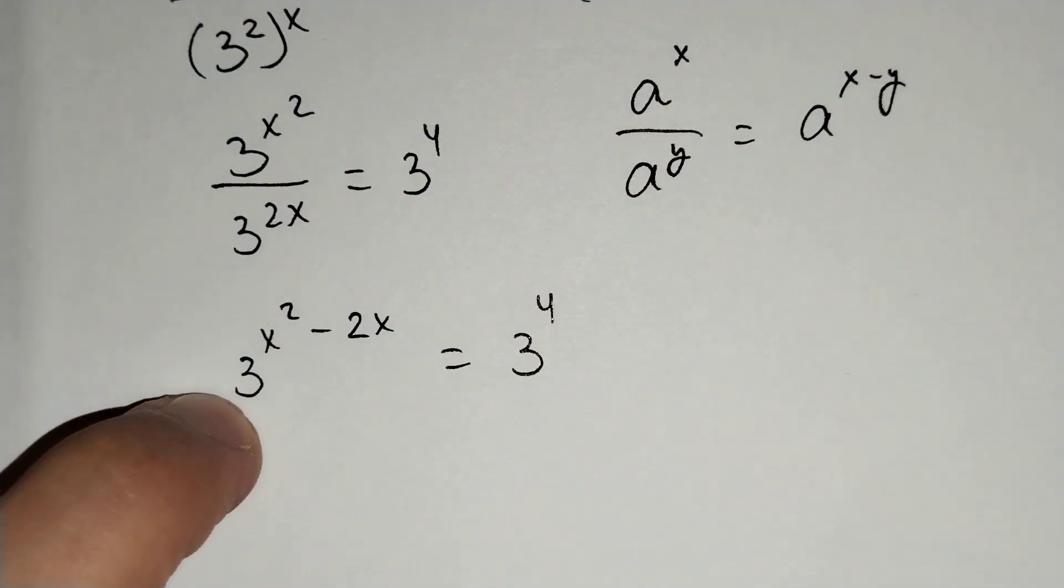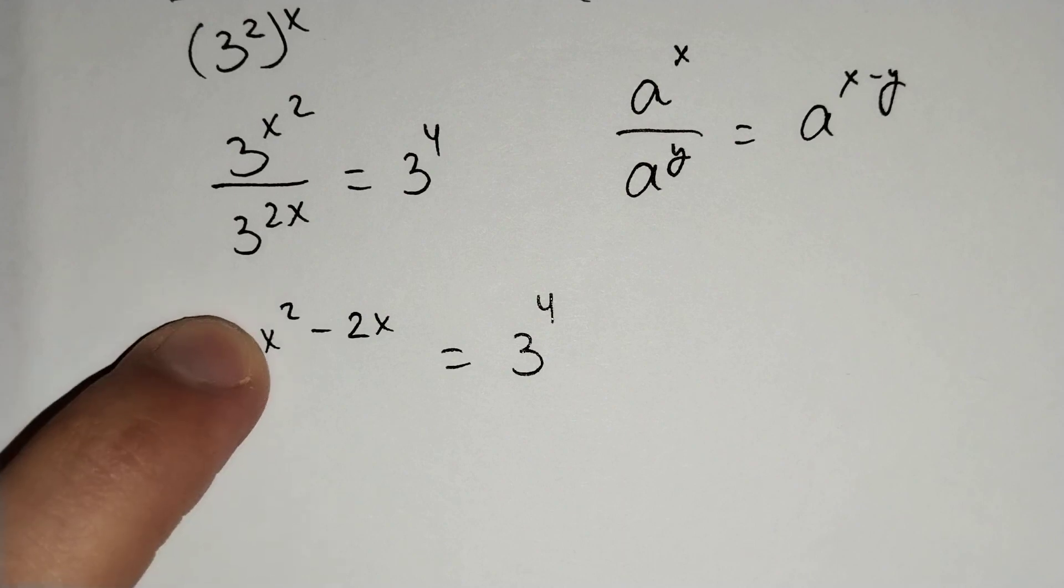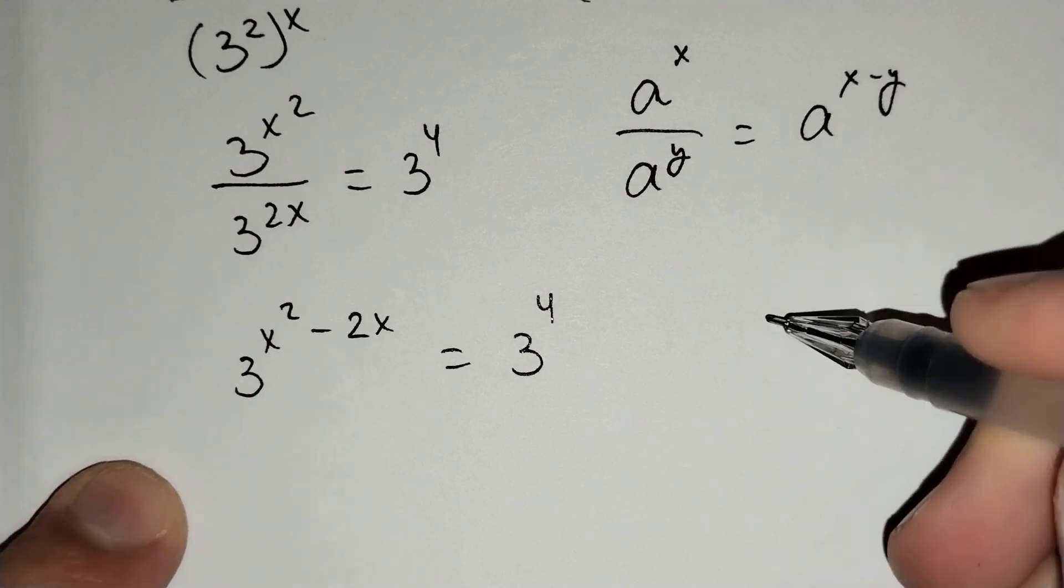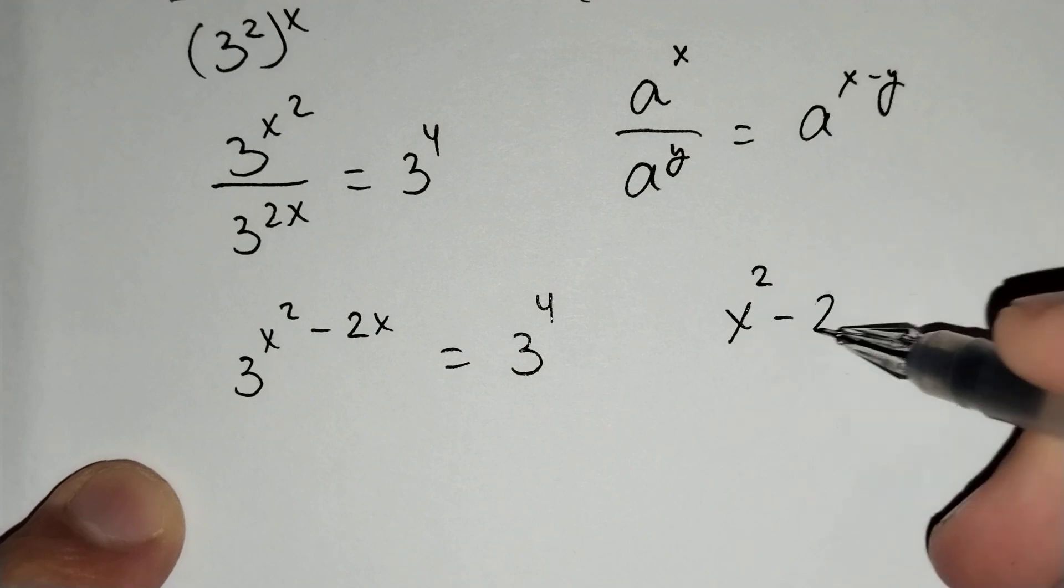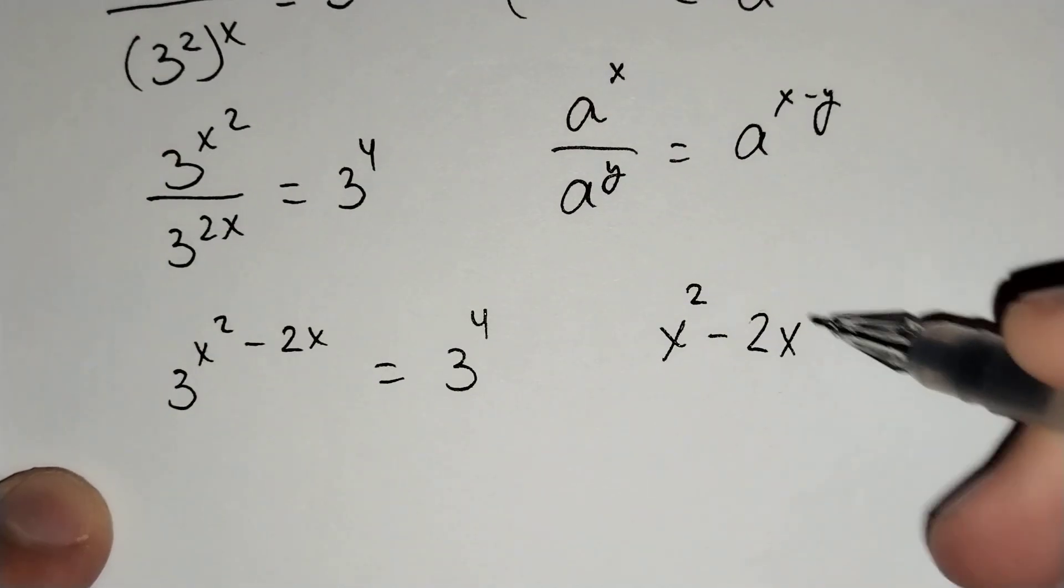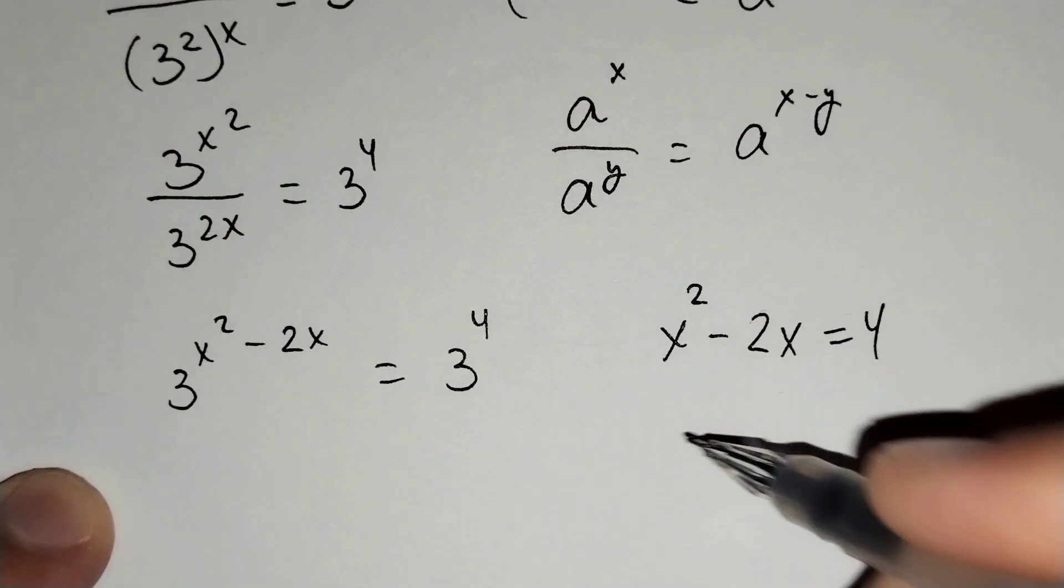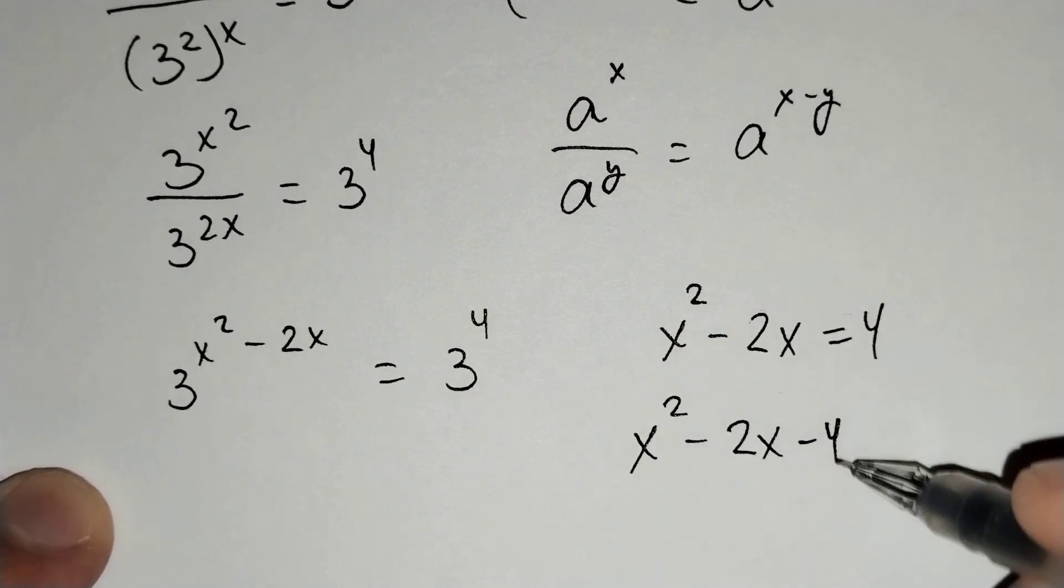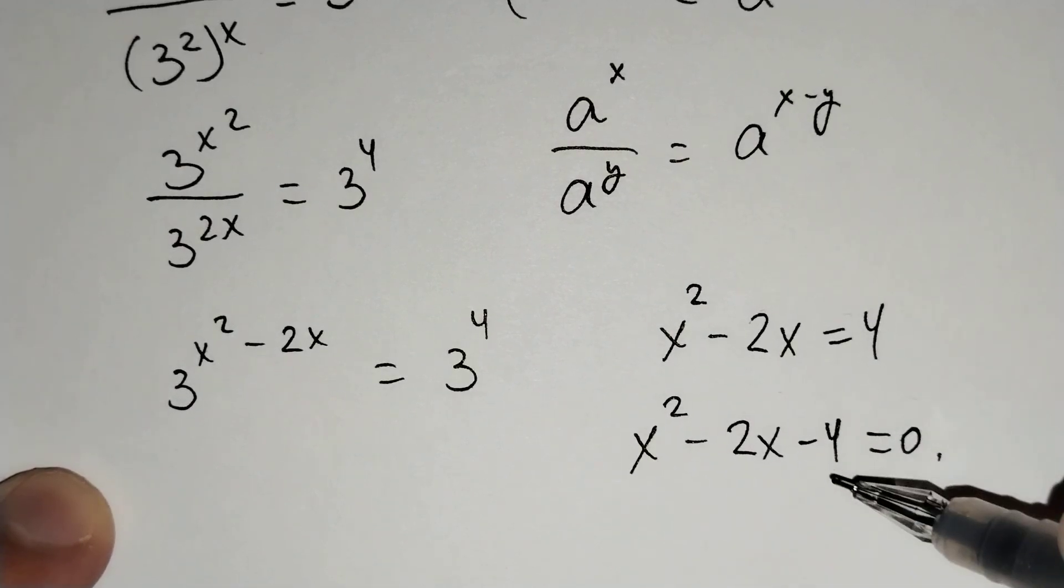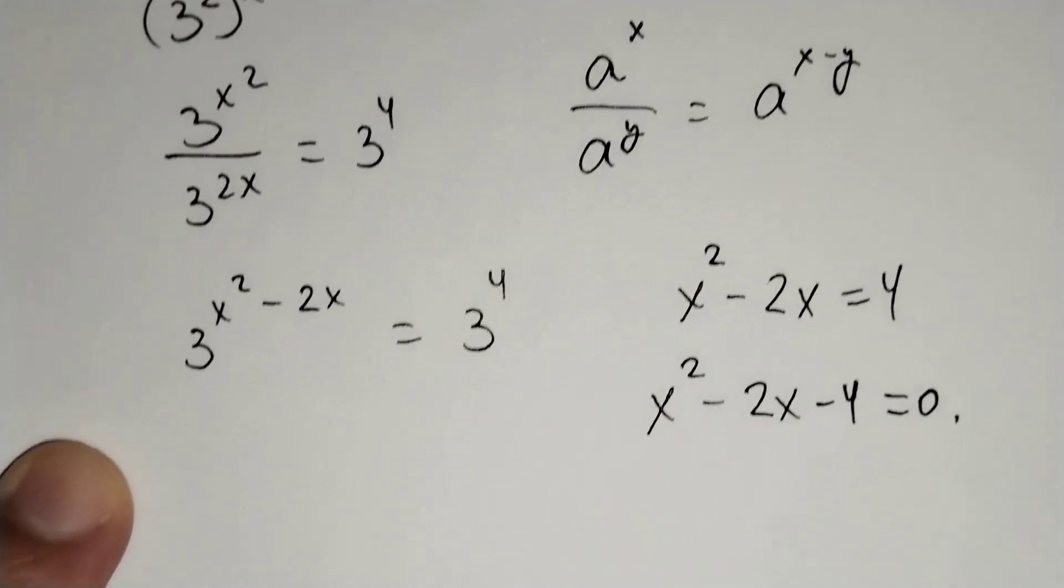The bases are the same, that's why the exponents should be equal. x squared minus 2x equals 4, and x squared minus 2x minus 4 equals 0. This is just the quadratic equation.